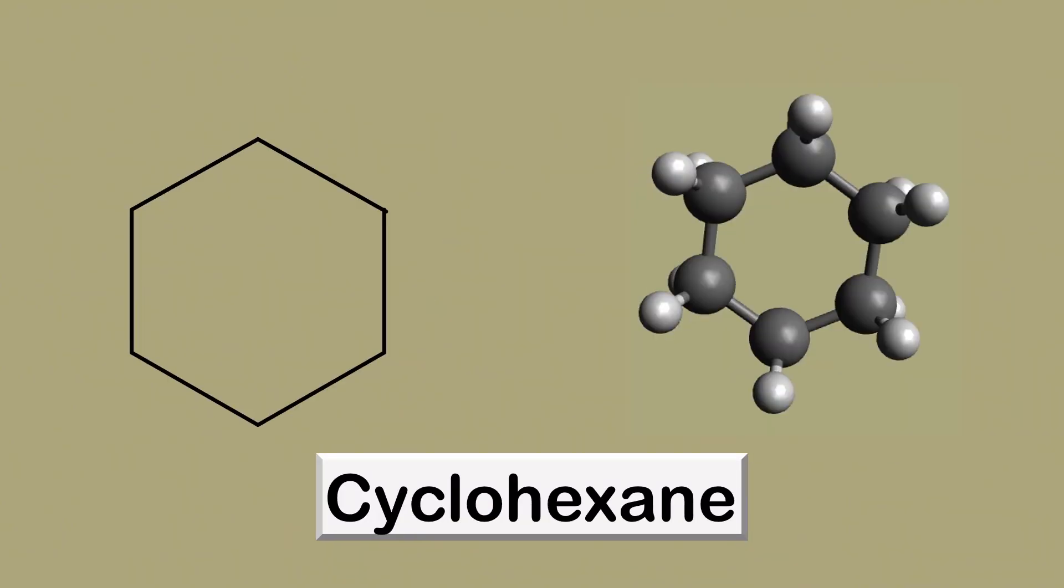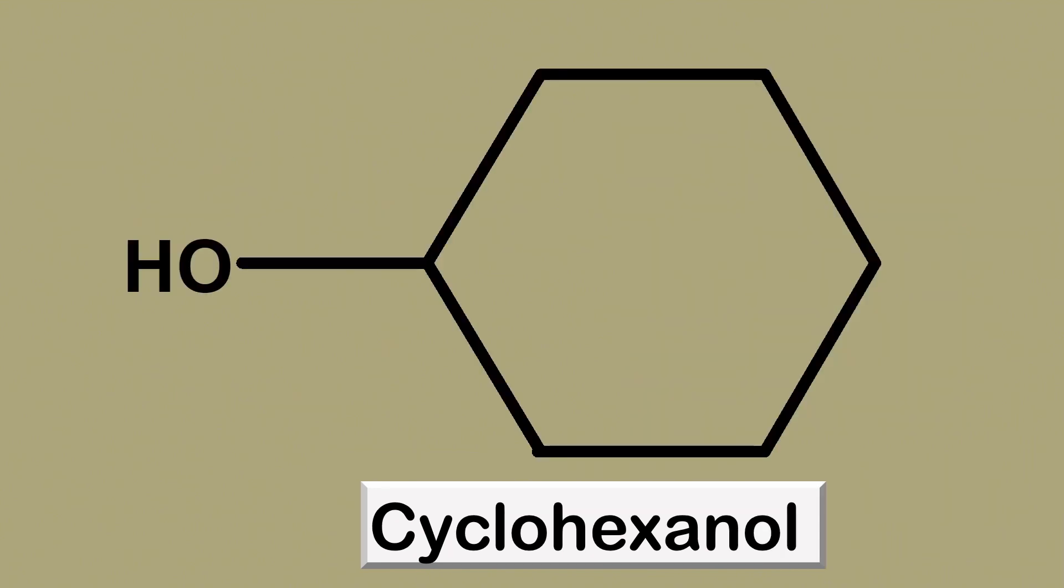And lastly, we have cyclohexane, which is usually used as a solvent for industrial operations. It is also used to make intermediates. For example, cyclohexanol. This has found applications in the manufacture of soaps, detergents, insecticides, and nylon.